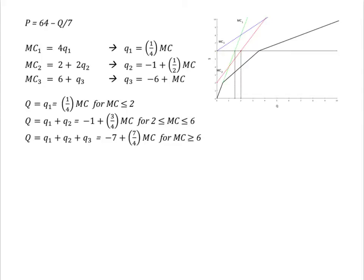Then, when marginal cost rises above two, Q is going to be equal to the output at plant one plus plant two. And when marginal cost rises above six,